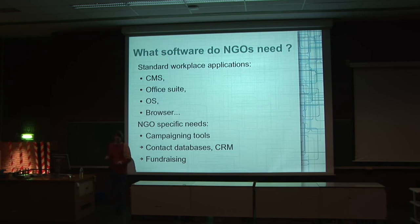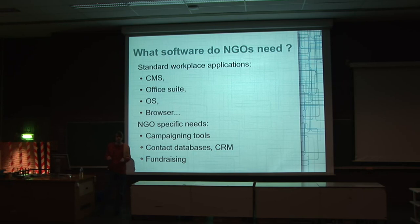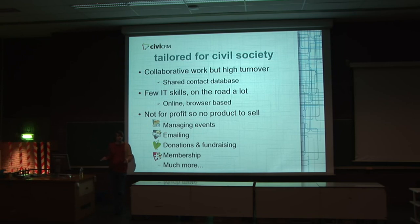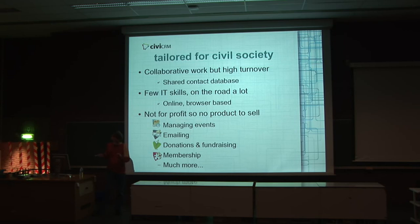There is a lot of collaborative work, a lot of volunteers that come in and come out, part-time workers. So having, like CiviCRM, a shared contact database obviously makes sense — so when someone leaves the organization, the contacts, the network, the history stays within the organization. And because they have few IT skills inside and are often working remotely, having something that is online and browser-based as CiviCRM makes sense. As for the features, because that's not for profit, that's not about selling products, sales cycles, or prospects — that's about managing events.